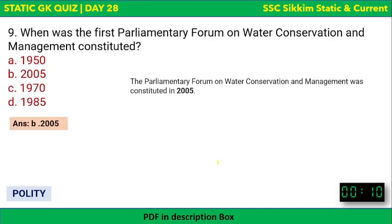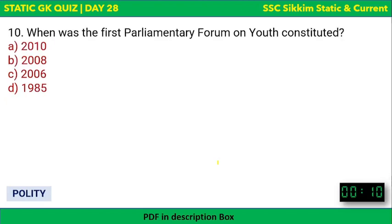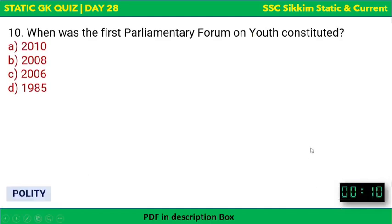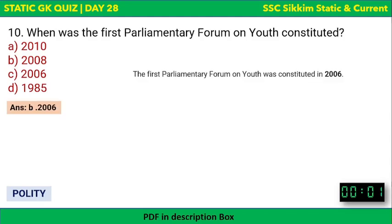The first parliamentary forum on water conservation and management was constituted in the year 2005. Next question: when was the first parliamentary forum on youth constituted? Options: 2010, 2008, 2006, or 1985. The first parliamentary forum on youth was constituted in the year 2006.